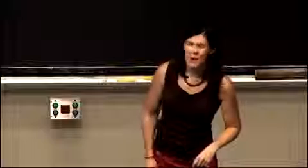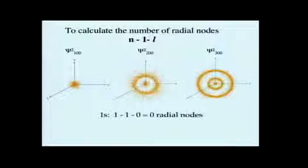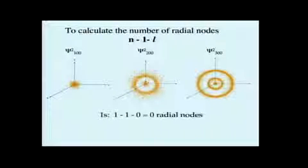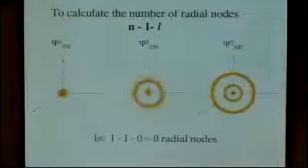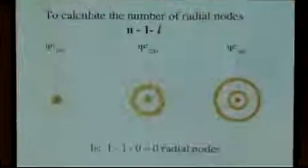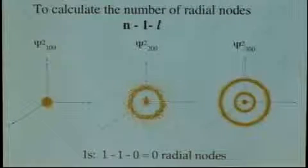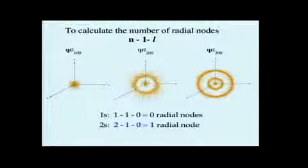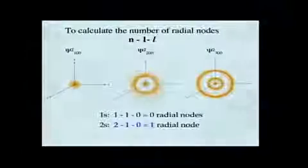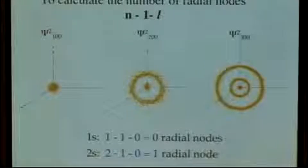It's very easy to calculate the number of radial nodes, and this works not just for s orbitals, but also for p orbitals, d orbitals, or whatever kind of orbitals you want to discuss. You just take the principal quantum number and subtract 1, and then also subtract your l quantum number. So for 1s: 1 minus 1, and l equals zero, giving zero radial nodes — which matches what we saw. For the 2s: 2 minus 1 minus zero, so we expect one radial node, and that is what we see in the probability density plot.